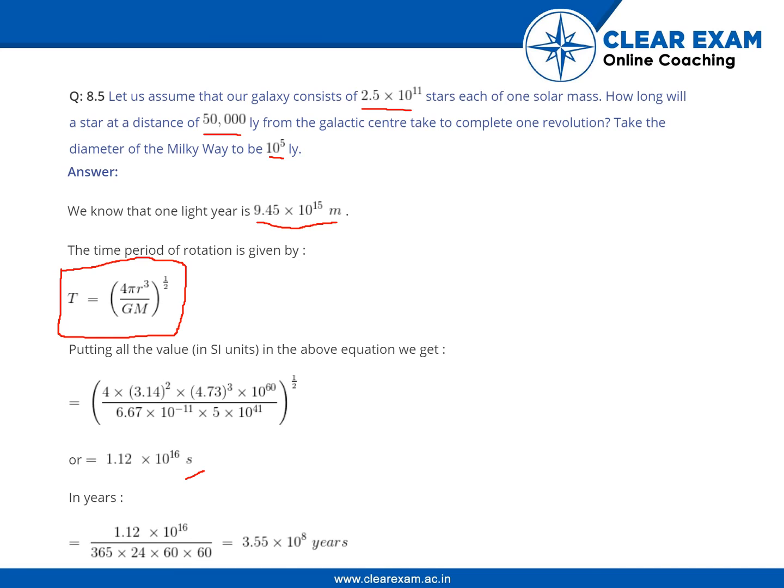In years, we need to convert this into years. We are dividing by 365 days into 24 hours into 60 minutes into 60 seconds. Seconds by seconds will give you the year. That is 3.55 into 10 power 8 years.